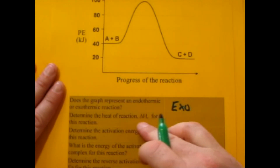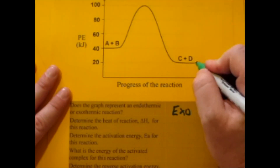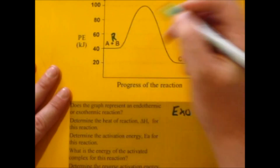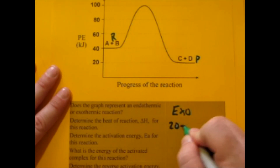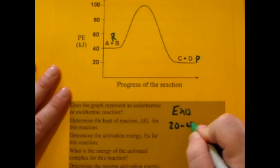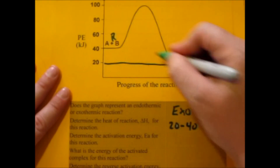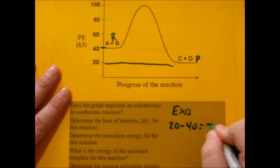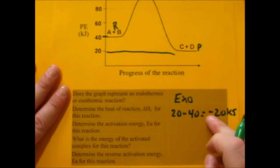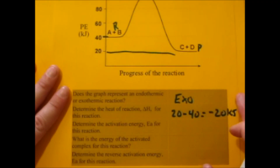Now for delta H, we do products minus reactants. Our products are at 20 and our reactants are at 40. That gives you negative 20 kilojoules. It's important that you put the negative there, because negative and exothermic have to go together.